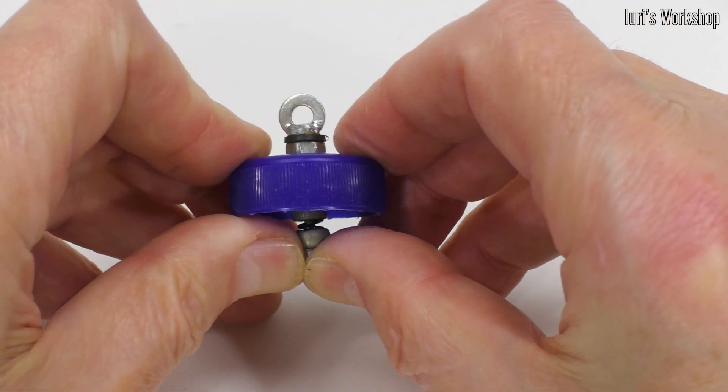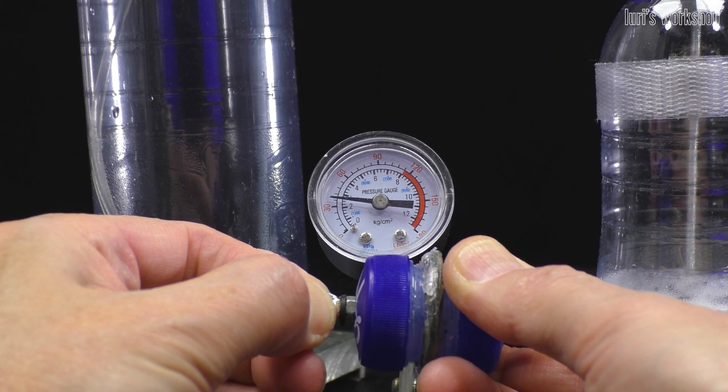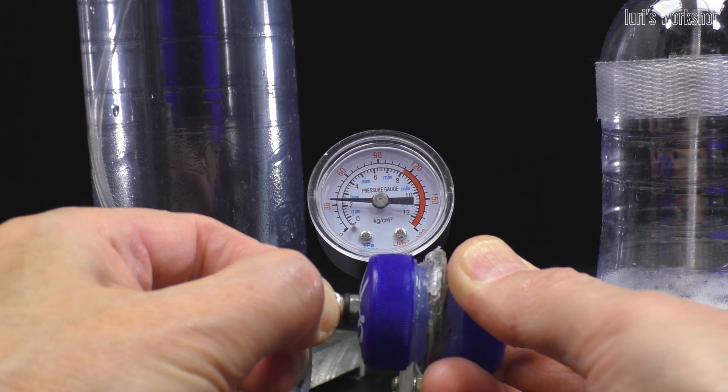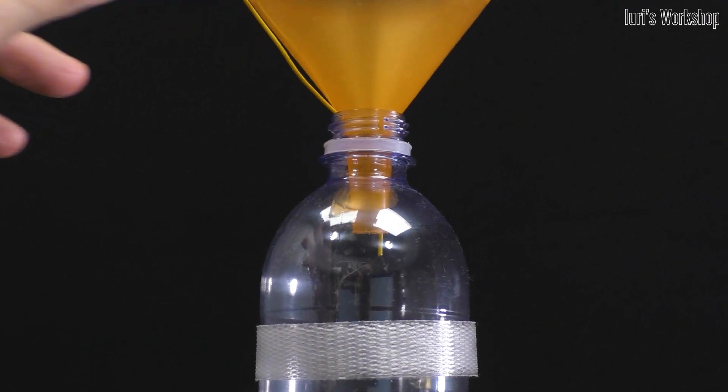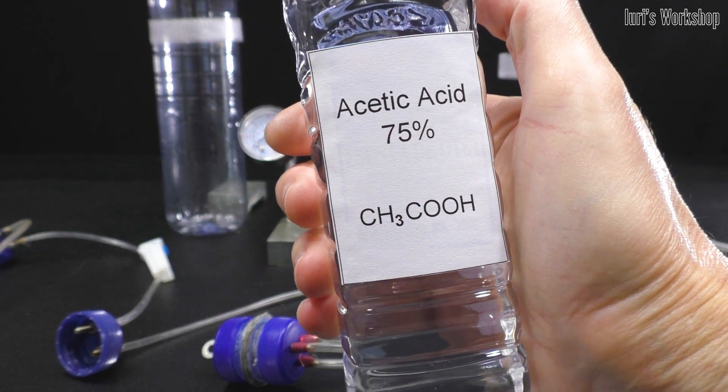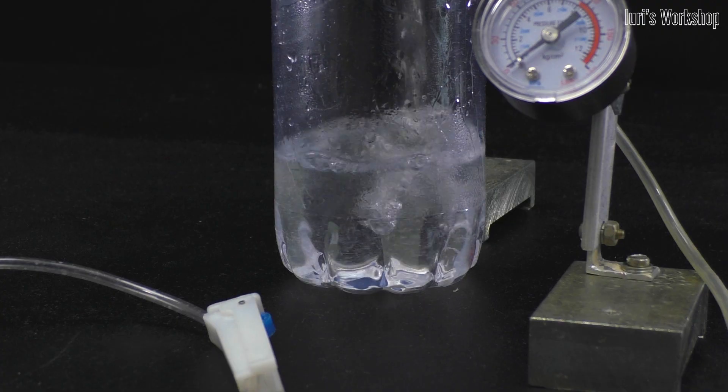And this safety valve protects the reactor from explosion in case of uncontrolled pressure increase. Let's test this reactor. First we'll pour vinegar essence into tank number 1.